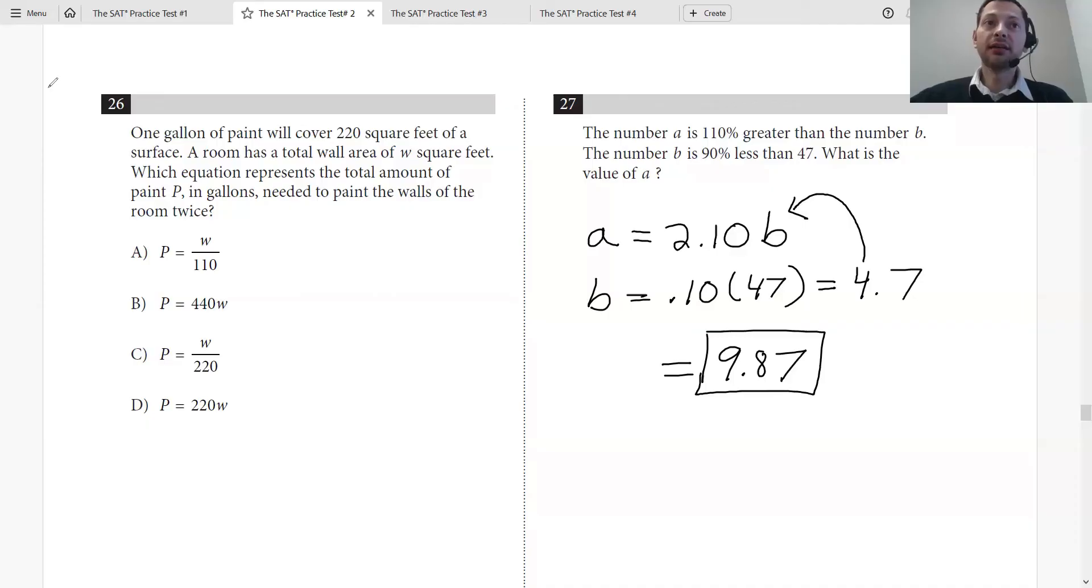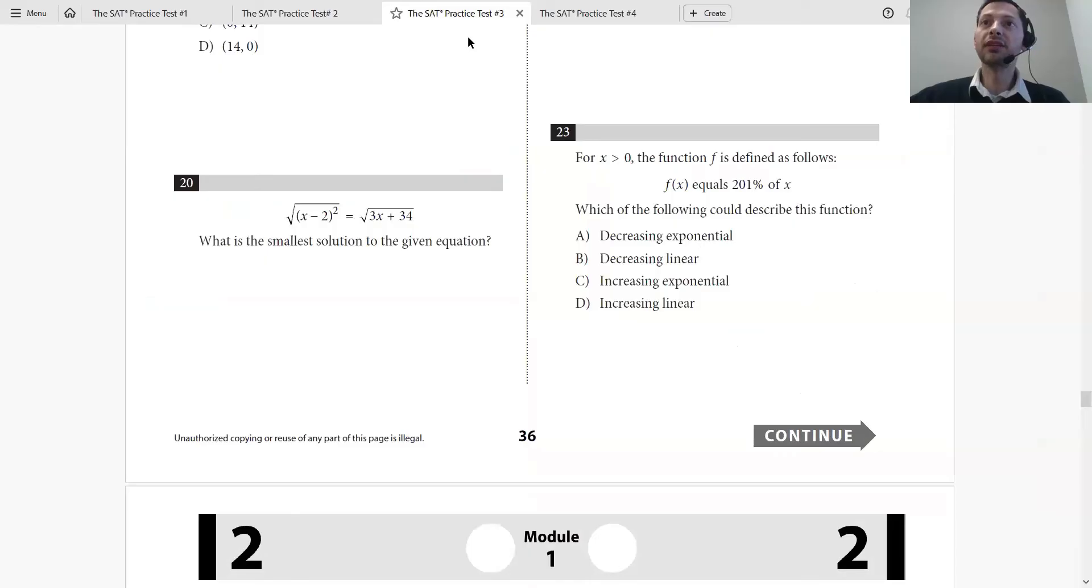Let's move on to the next problem, number 23. For x greater than 0, the function f is defined as follows: f of x equals 201% of x.